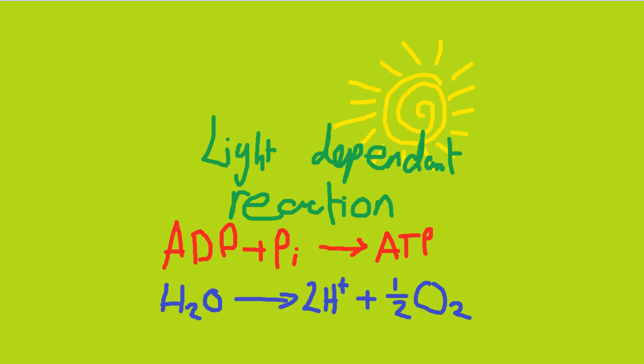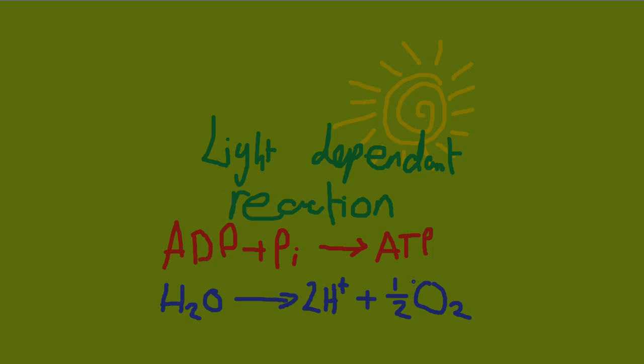The main purpose of the light dependent reaction is to turn an ADP molecule and an inorganic phosphate molecule into ATP, which is shown by this top equation here. Its second function is to solicit the hydrolysis of water into H+ ions and O2 molecules.